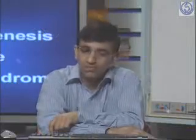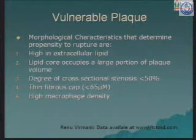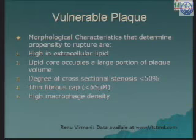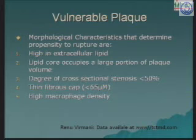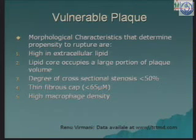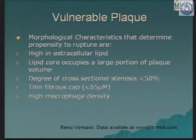We had left on the topic of the vulnerable plaque. There are two or three important things here. The various characteristics of the vulnerable plaque include: one, high macrophage density, which shows that inflammatory levels are much higher within these plaques. Another important thing is that the degree of cross-sectional stenosis is mentioned as less than 50%. It is important to understand that plaques which usually rupture and cause acute coronary syndromes are the ones which are not significantly causing obstruction. That is why more modalities are coming in to identify these vulnerable plaques.